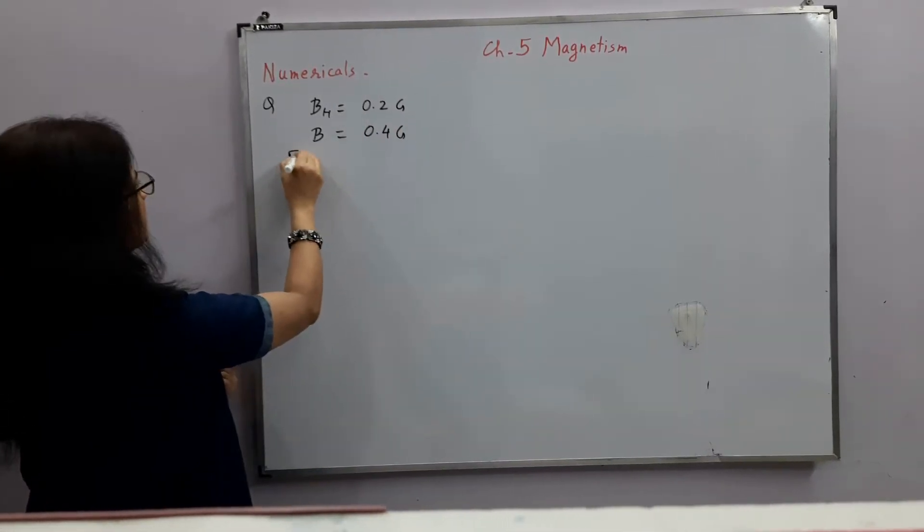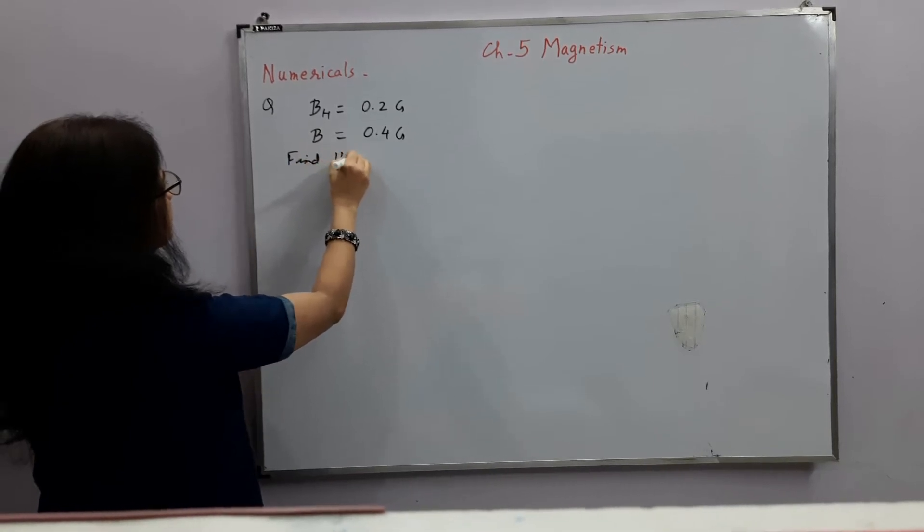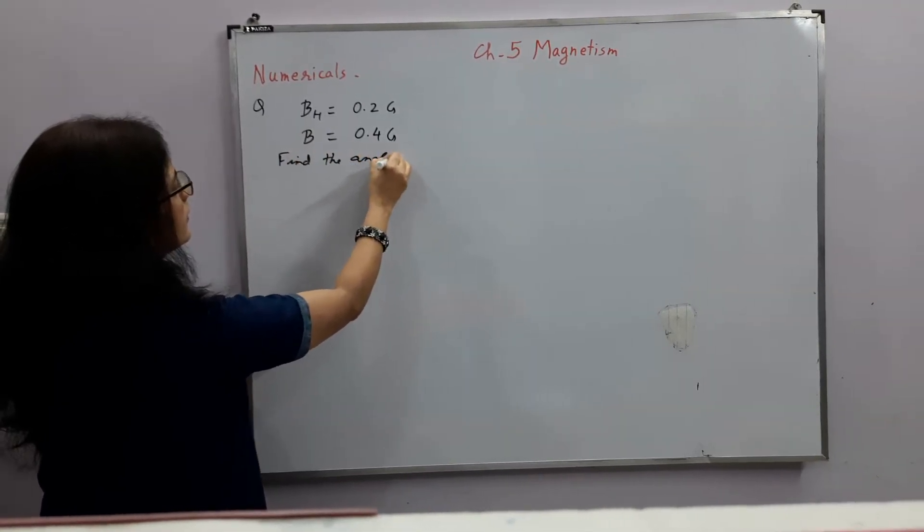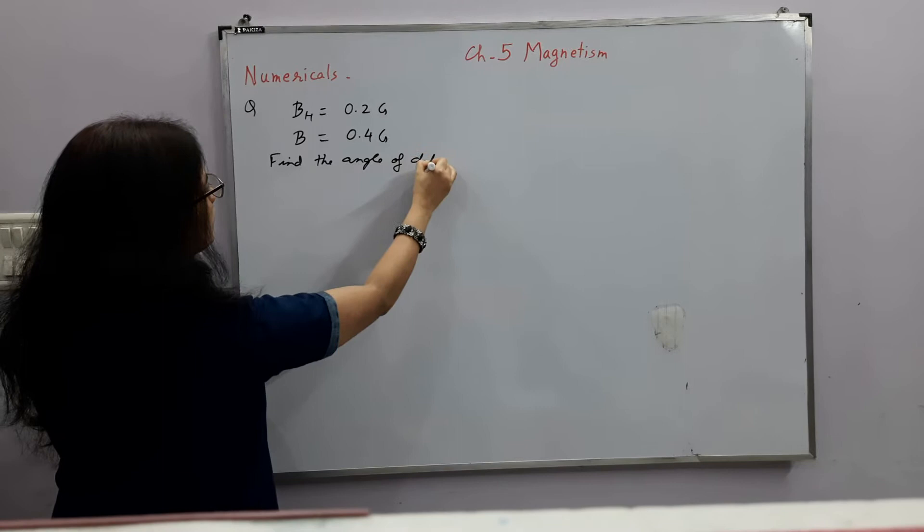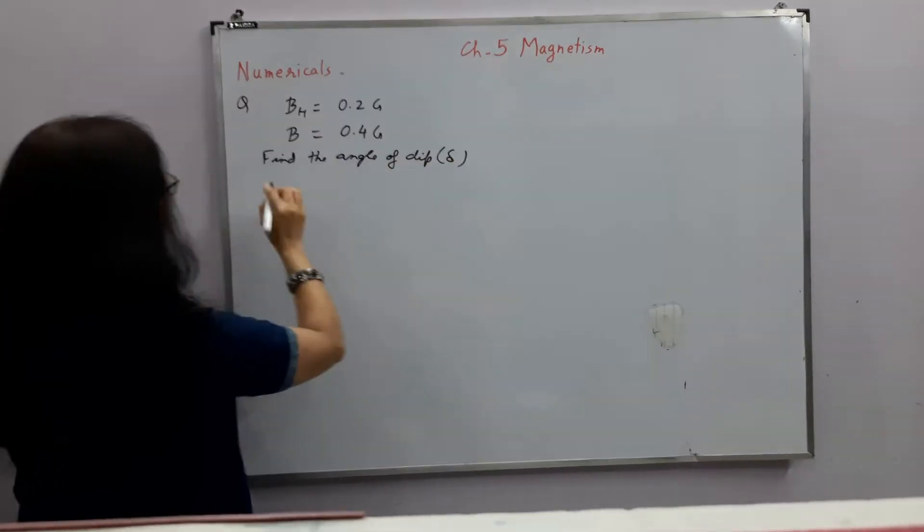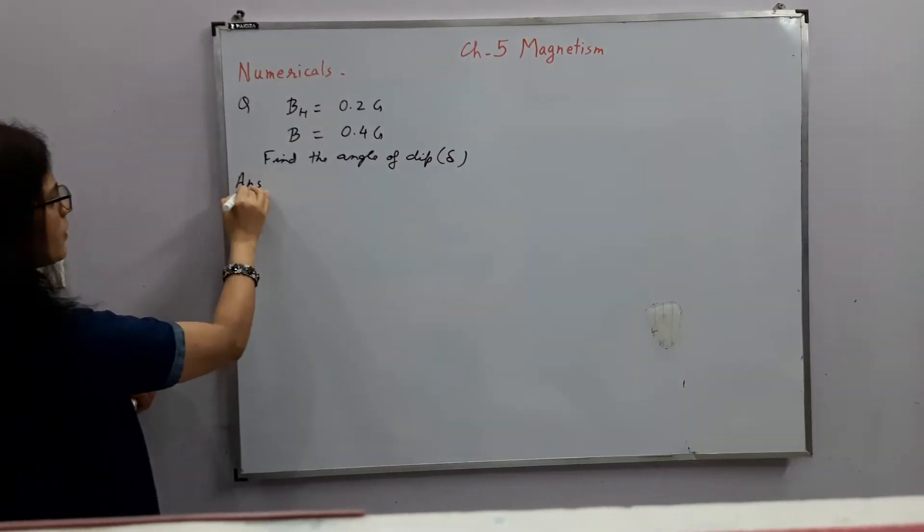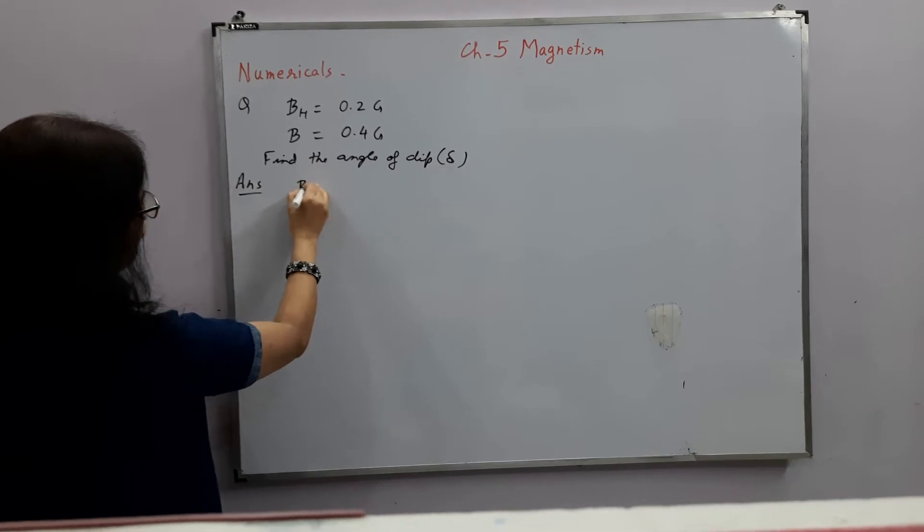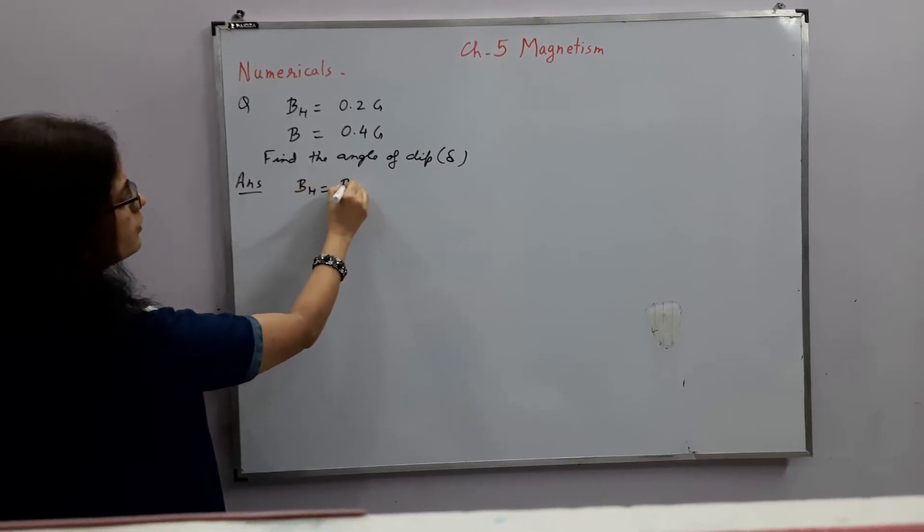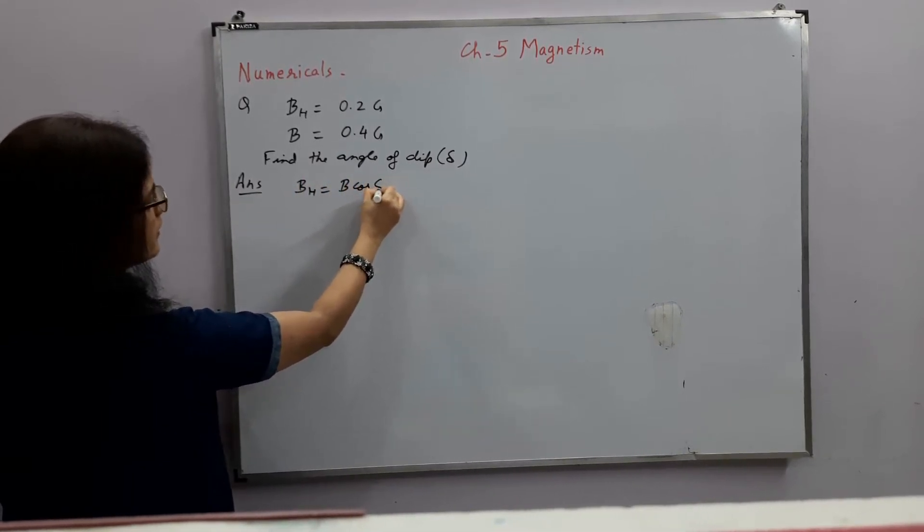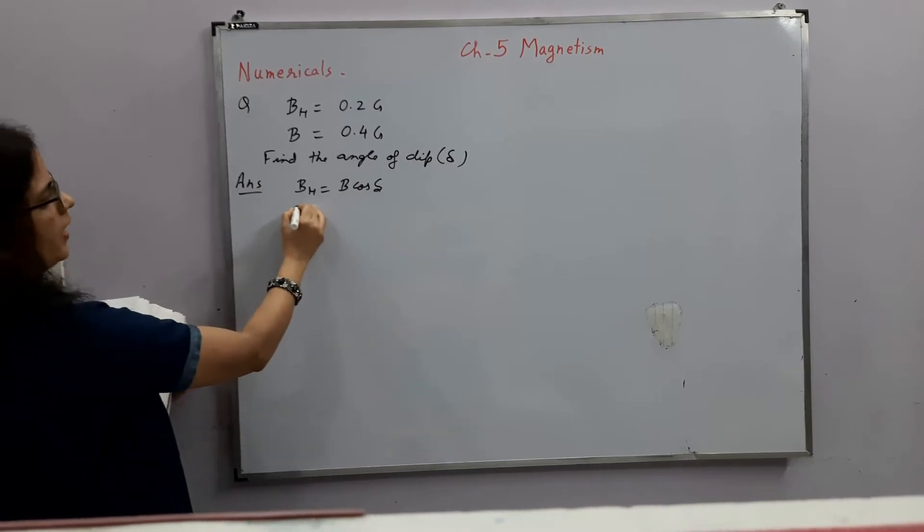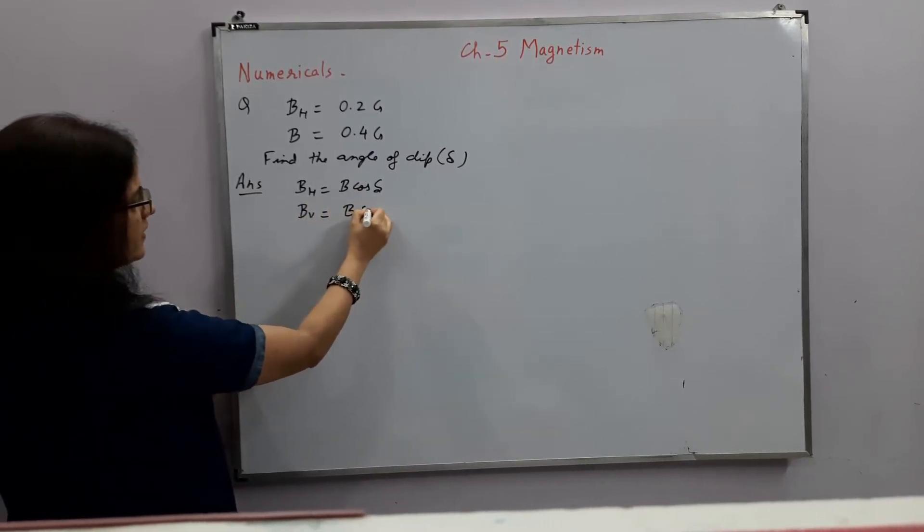Find the angle of dip. So what is the relation? We know that BH is equal to B cos delta and BV is equal to B sine delta.